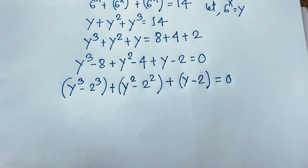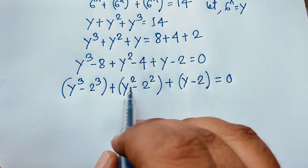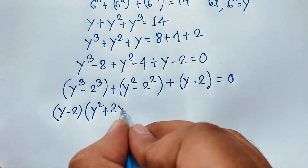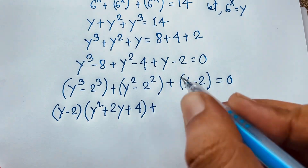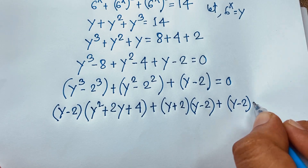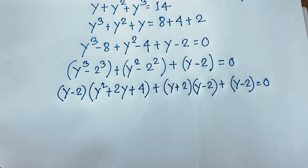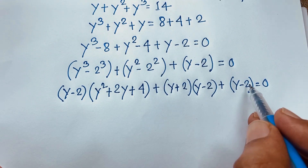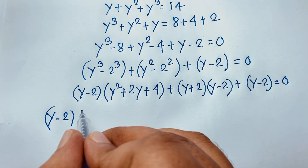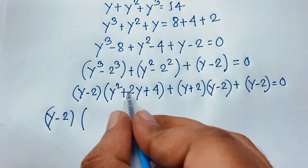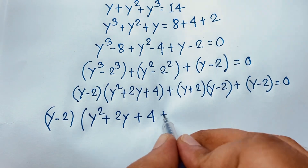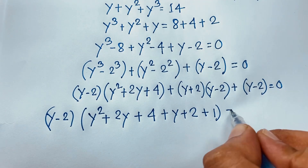We apply a³ minus b³ equals (a minus b)(a² plus ab plus b²), and a² minus b² equals (a plus b)(a minus b). This gives: (y minus 2)(y² plus 2y plus 4) plus (y plus 2)(y minus 2) plus (y minus 2) equals 0. Since (y minus 2) is common to all terms, we factor it out: (y minus 2)(y² plus 2y plus 4 plus y plus 2 plus 1) equals 0.